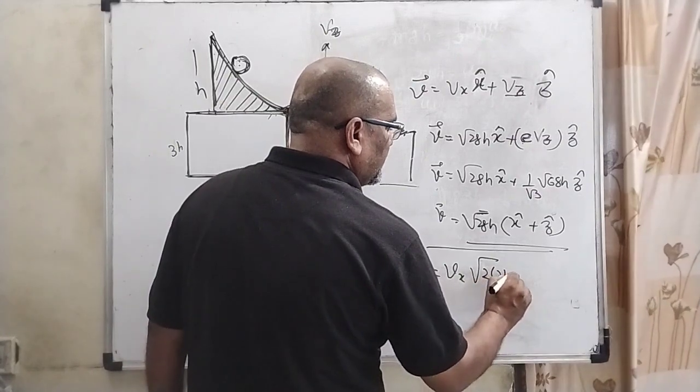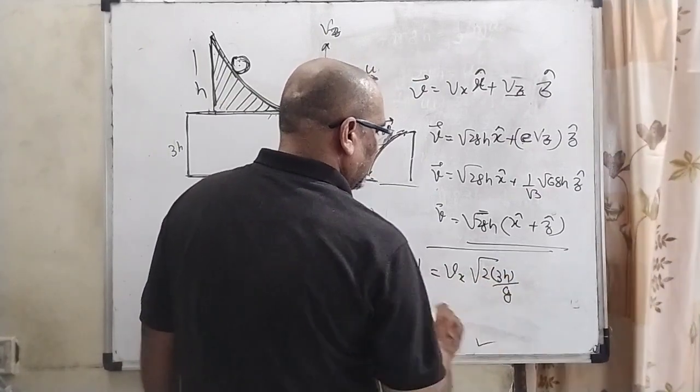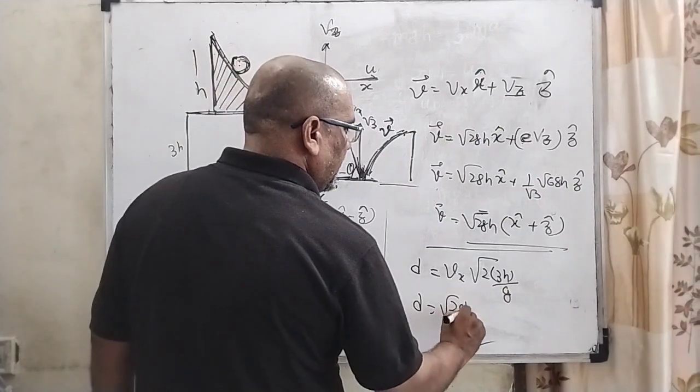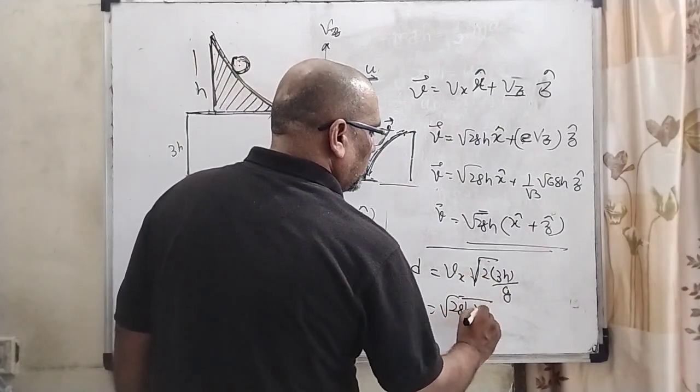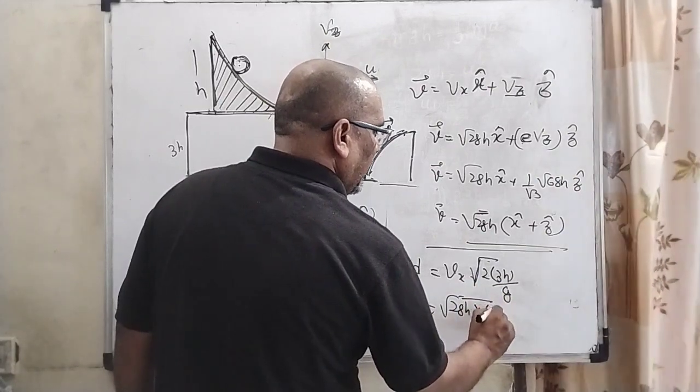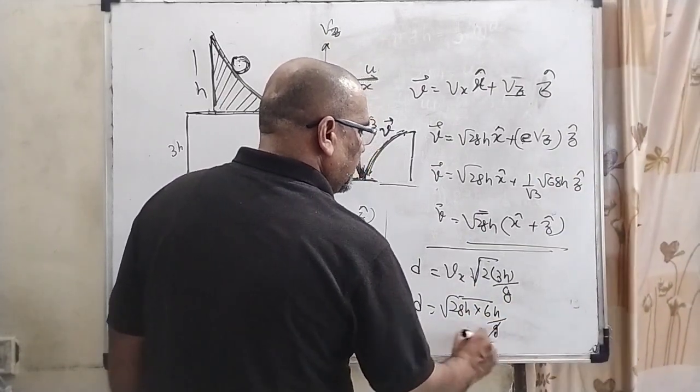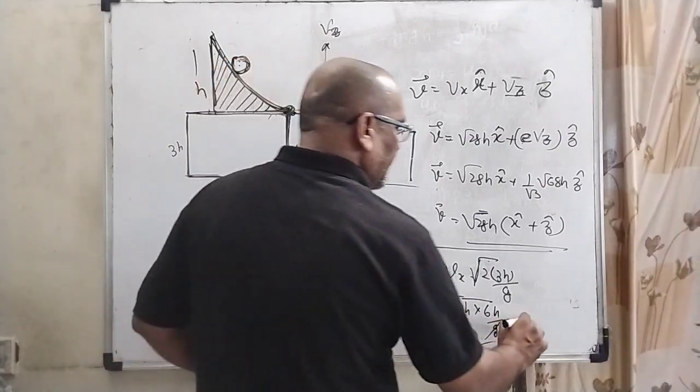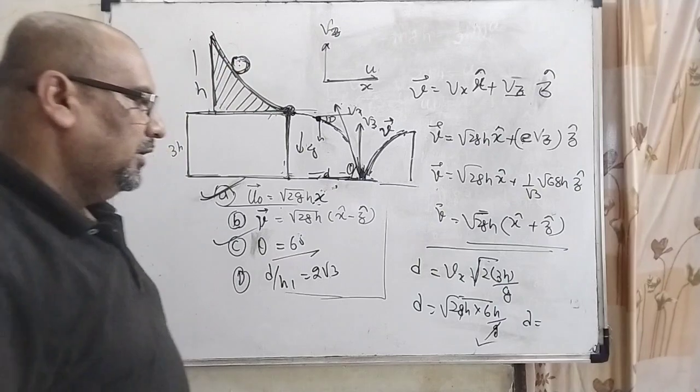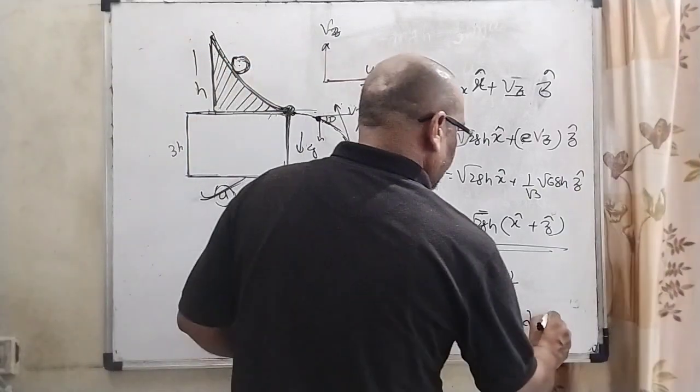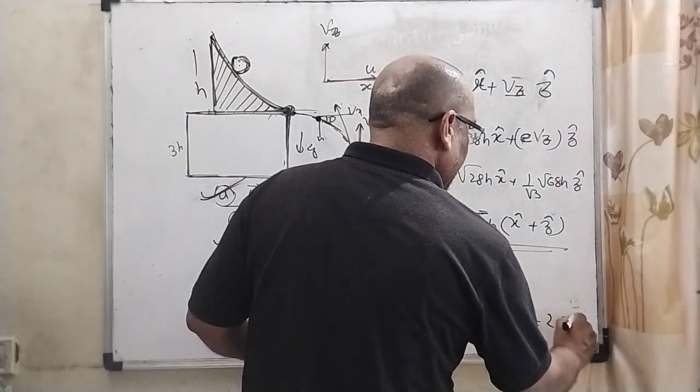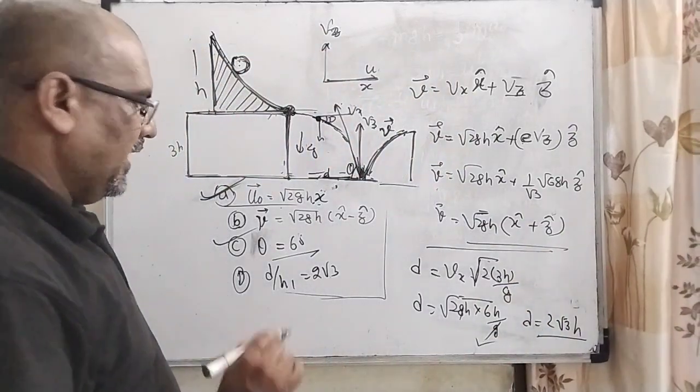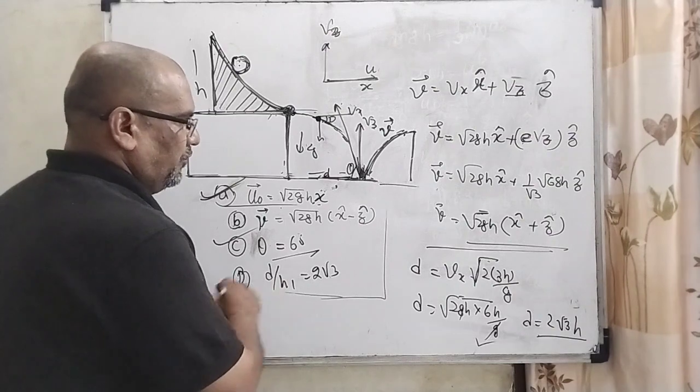The time of flight is root of 2 times 3h by g, and vx is root 2gh. So d equals root 2gh times root 6h by g. After canceling g and simplifying root 12h, we get d equals 2 root 3h.